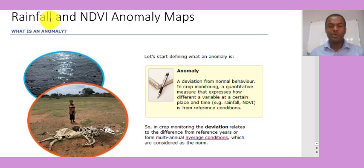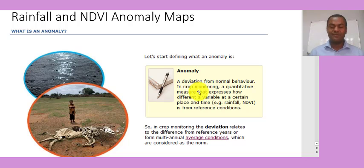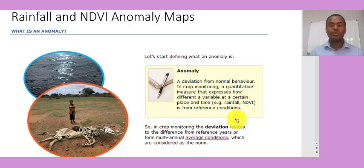Another remote sensing application for disaster assessment is rainfall and NDVI anomaly maps. An anomaly is a deviation from the normal. When we say normal, it can be defined as the average of five, ten, or thirty years of data — it depends on the situation. We can have an anomaly for both rainfall data and NDVI data.